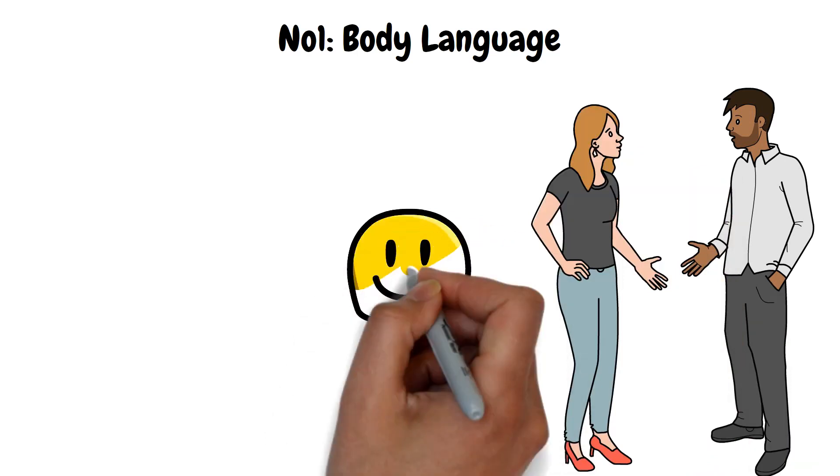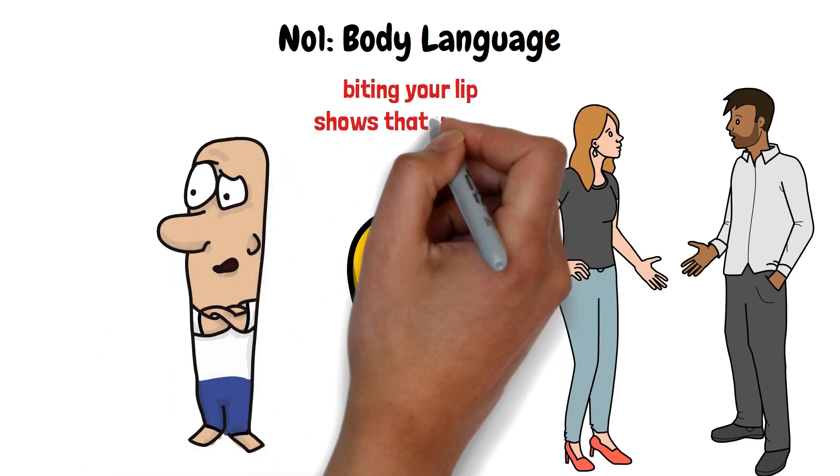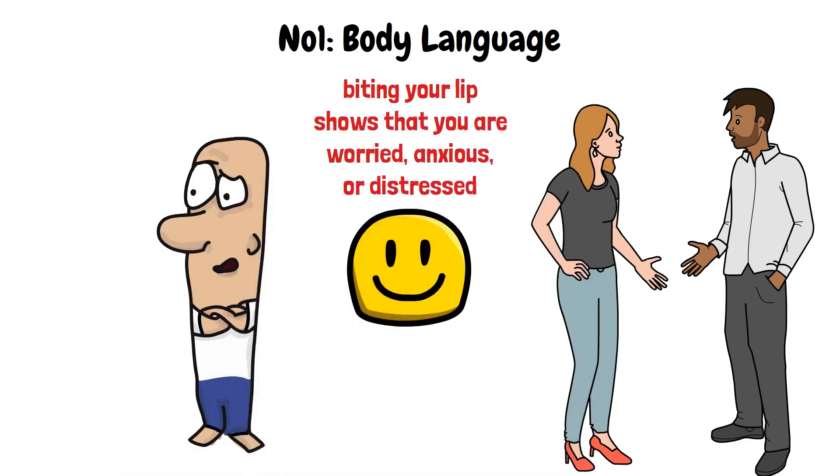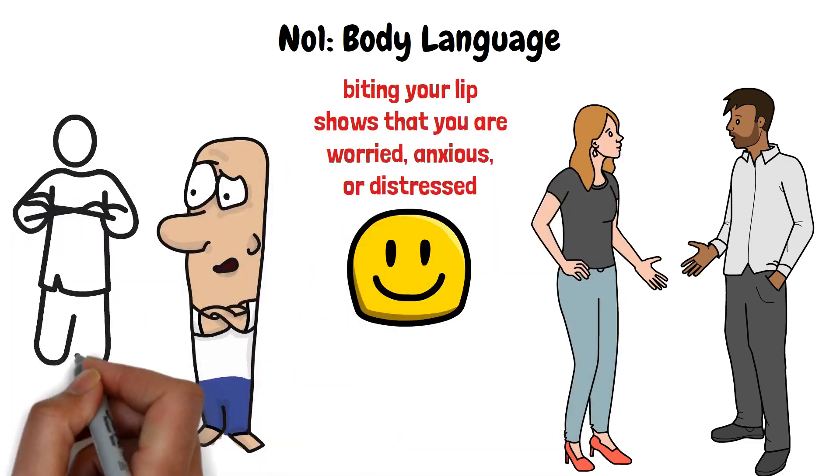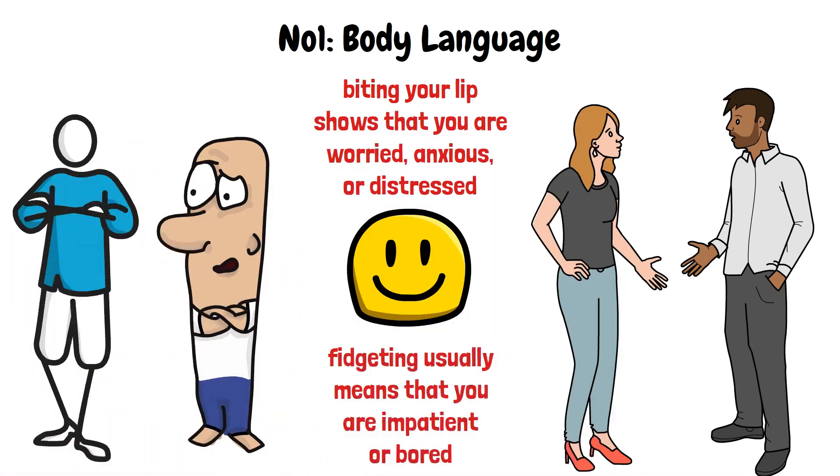Smiling conveys happiness and an open nature. Furrowed eyebrows mean confusion, and biting your lip shows that you are worried, anxious, or distressed. Crossed arms mean you are defensive and not open for communication, and fidgeting usually means that you are impatient or bored.